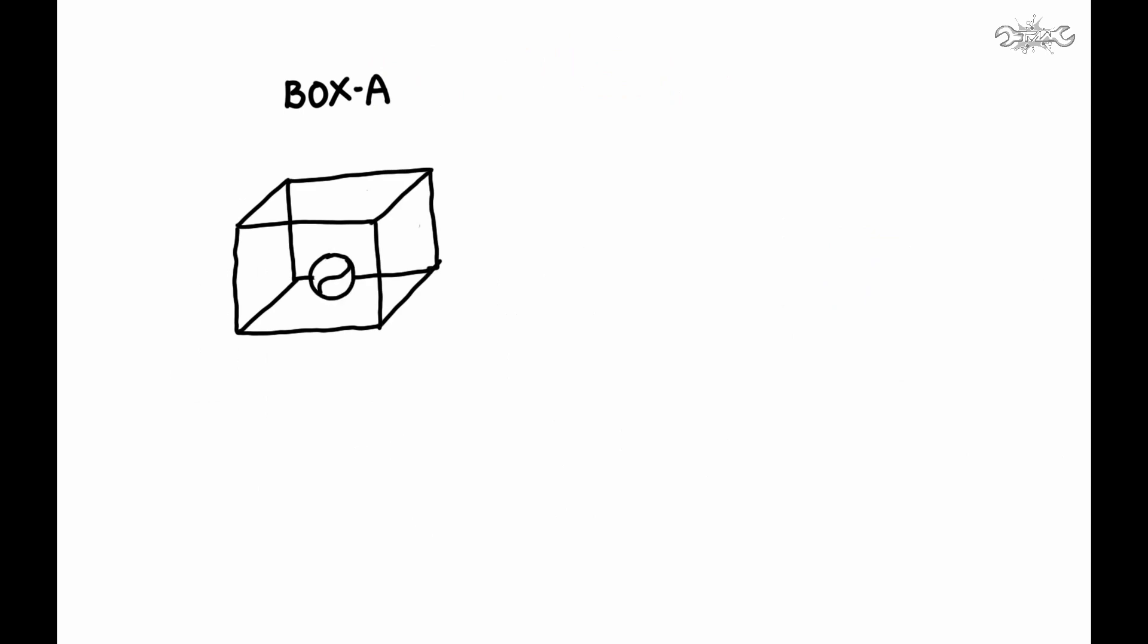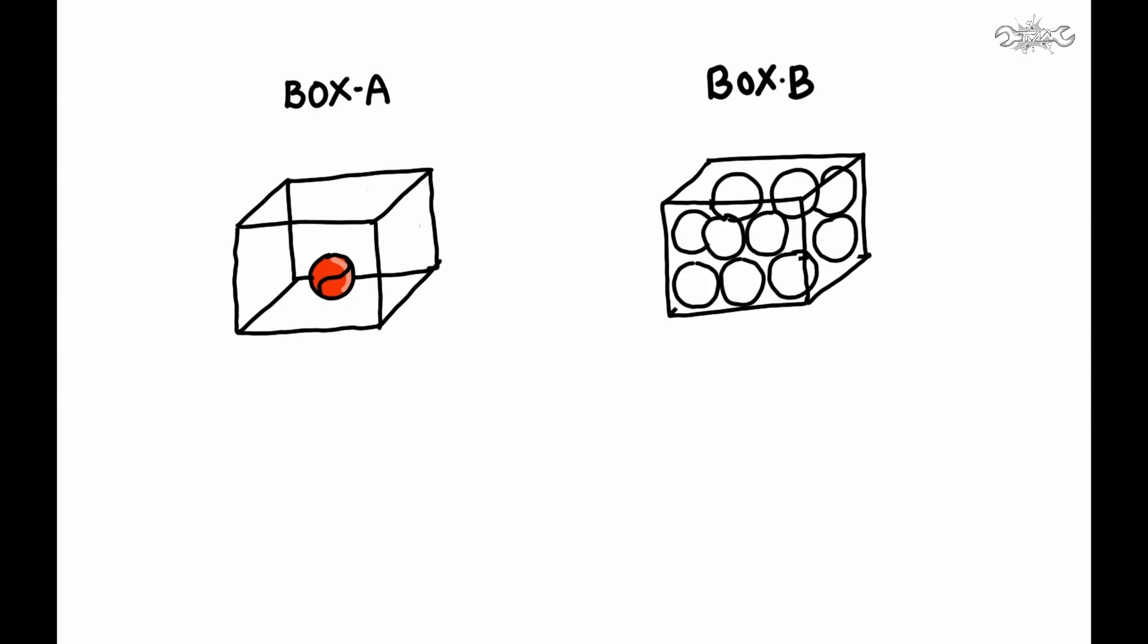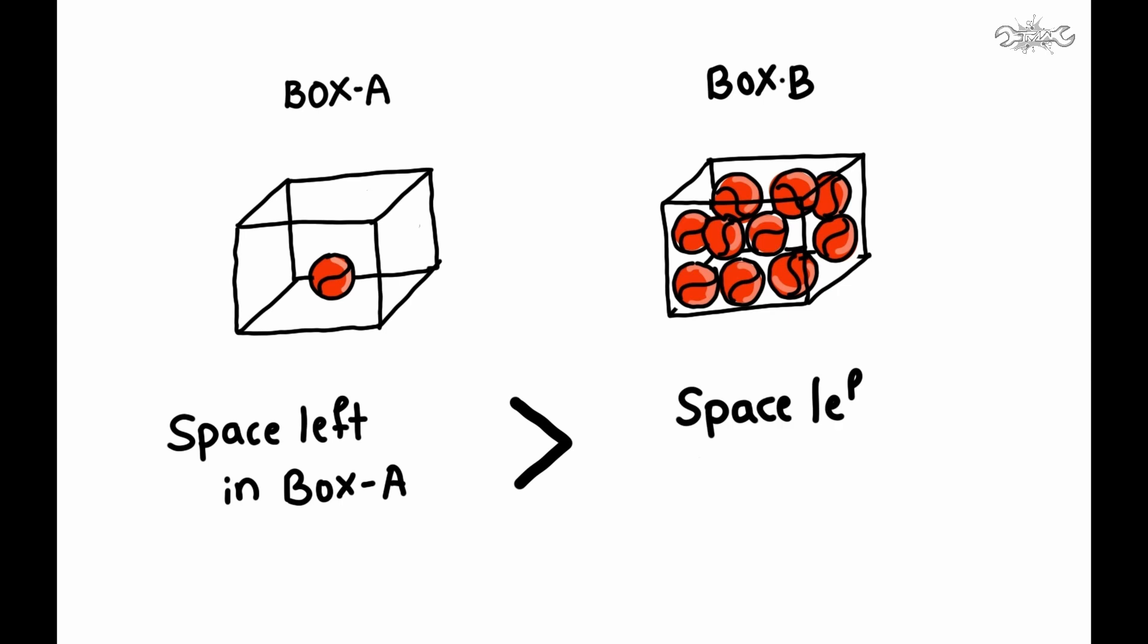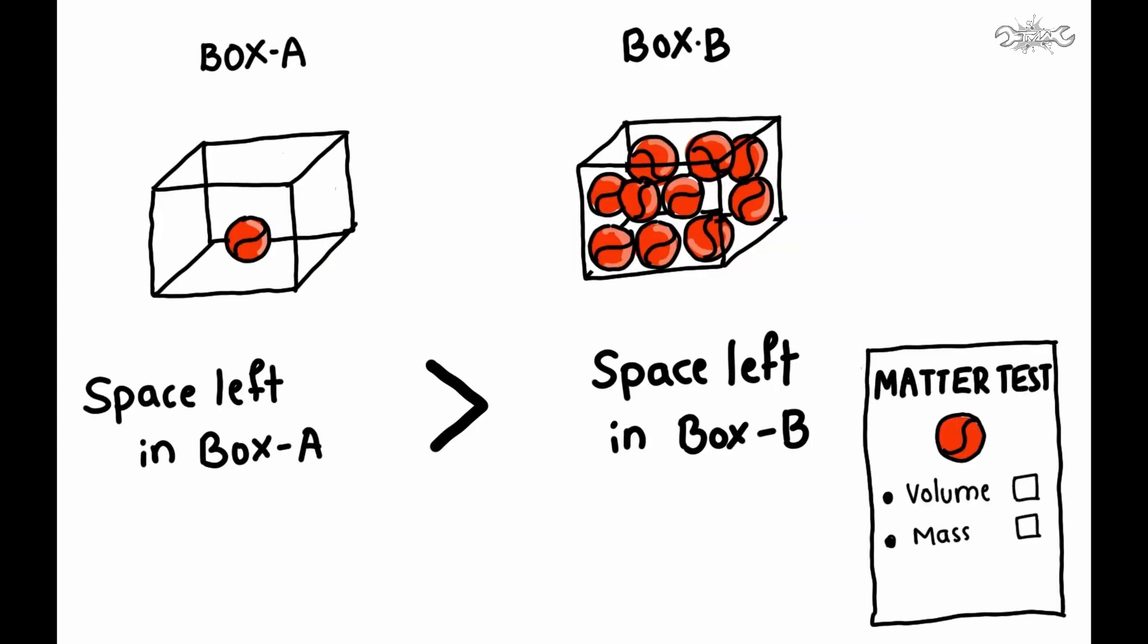Imagine that box A contains a cricket ball. Within the box, the ball occupies some space. We take another box B and fill it with 10 cricket balls. The box almost fills. We can understand that every ball occupies some space available inside the box.